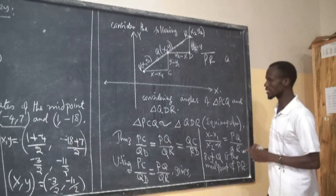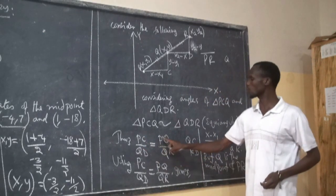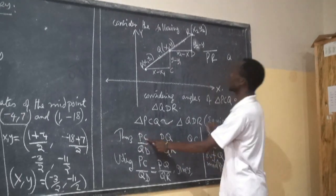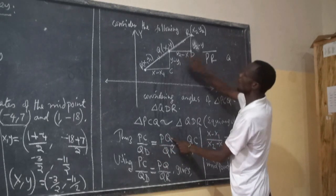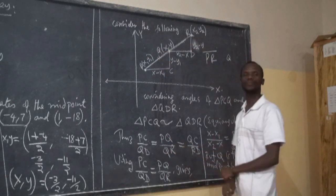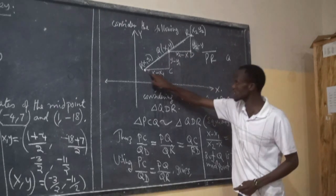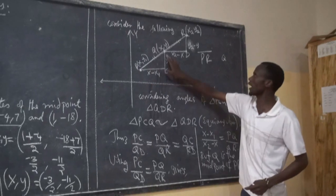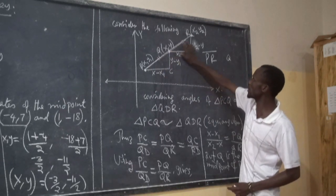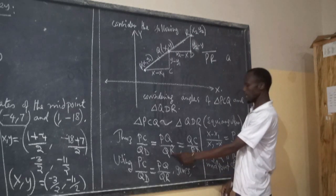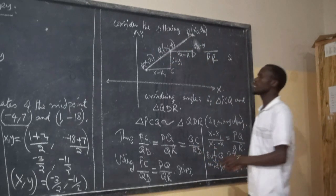Are we together? Now, according to similarity, we have PC over QD is equal to PQ over QR. This means: PC divided by QD equals PQ divided by QR, which also equals QC over RD. This is what I have written here.